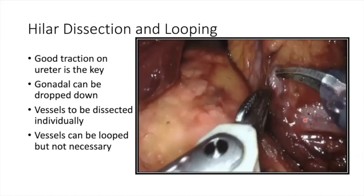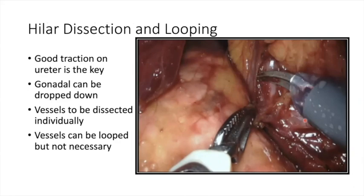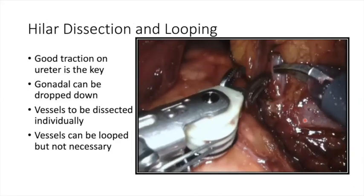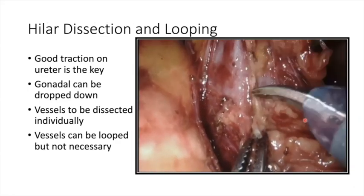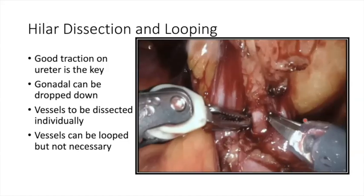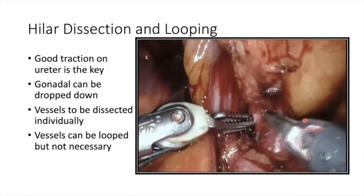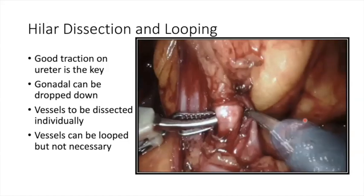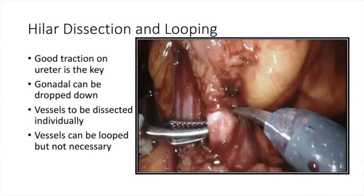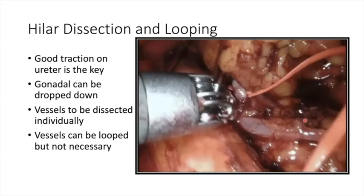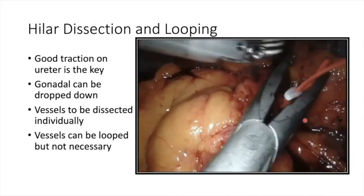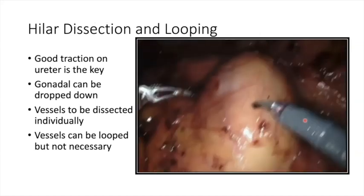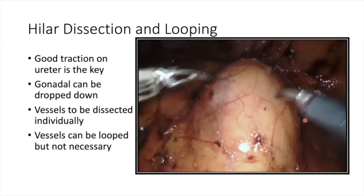Once that is done, traction onto the ureter helps in dissecting the vessels. The gonadal vessels can be dropped down especially when doing partial or radical nephrectomy. Both artery and vein should be individually dissected based on the preoperative angiography. Looping the vessels is personal preference — for complex partial nephrectomies I usually prefer looping the vessels.